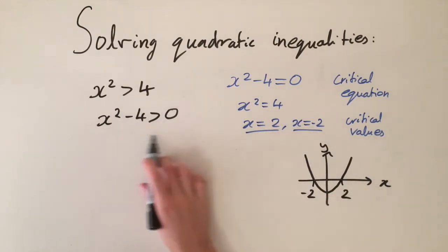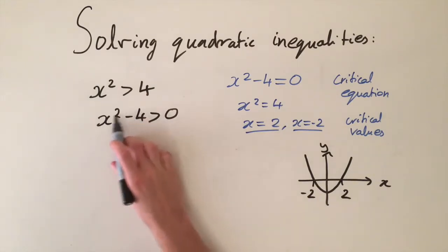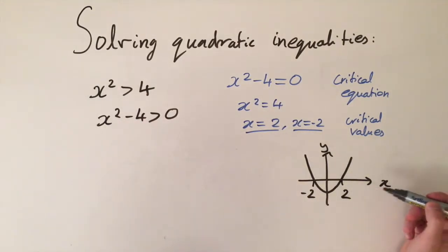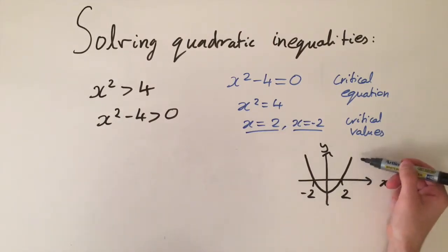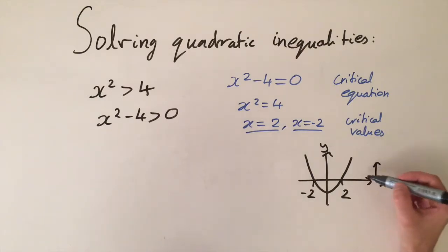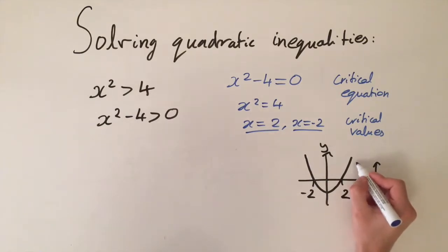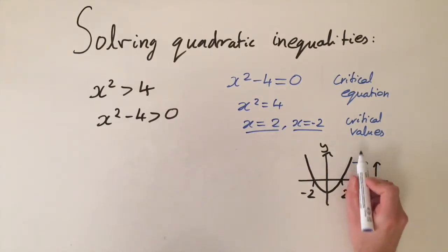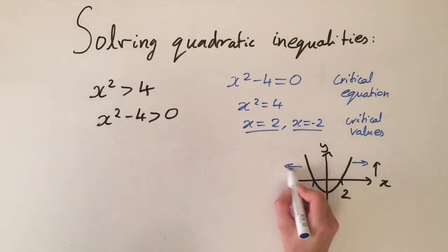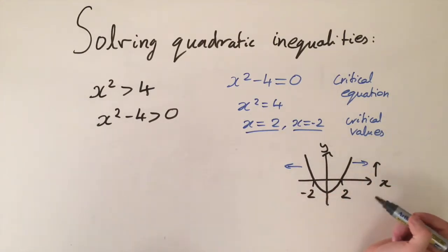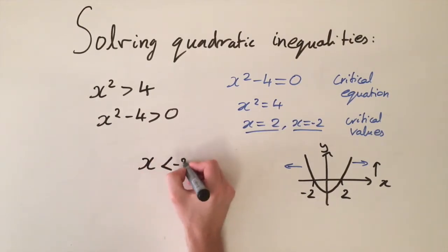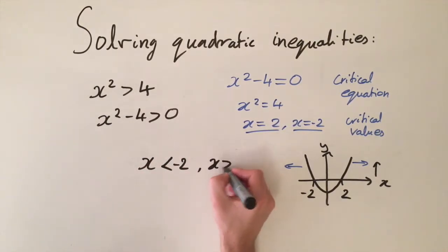Now we have to think about what the inequality is asking us. It's asking when this quadratic function is greater than zero. So graphically, this corresponds to values of x such that y is positive. Just by looking at the graph, this is going to be when x is greater than two — the graph is above zero — and also when x is less than minus two, because that also corresponds to when y is positive.